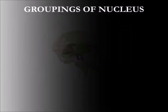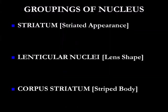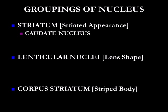The grouping of nuclei are based on the appearance of the particular nucleus — like striated appearance, lens-shaped appearance, and appearance of a striped body.